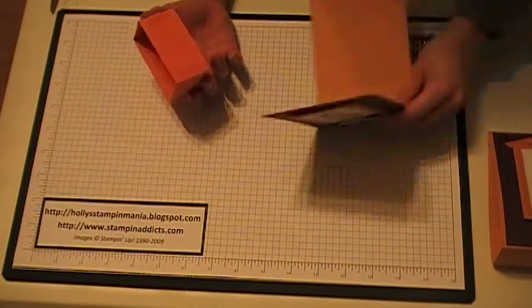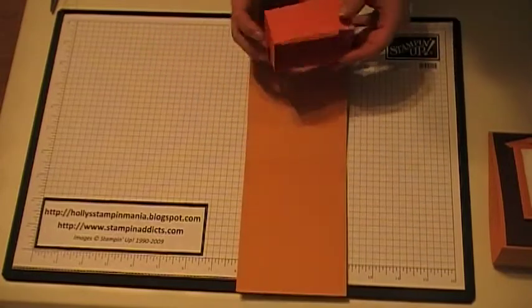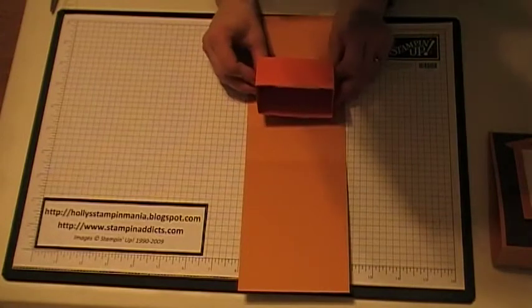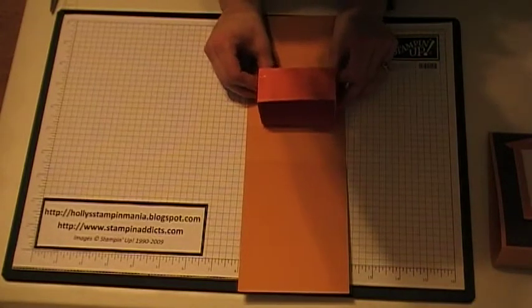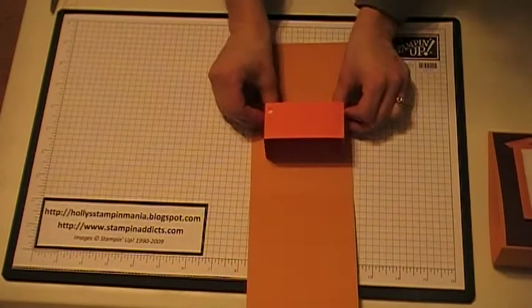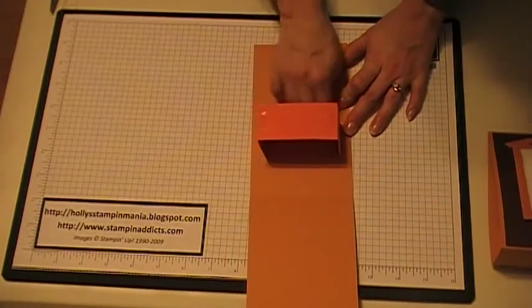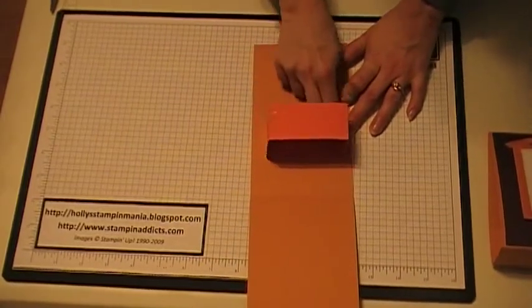The next thing you want to do is rip this backing off. And then you're going to bring this in here and you want to put this right at the scored line in the center there. Just like that. Press down good so it folds.